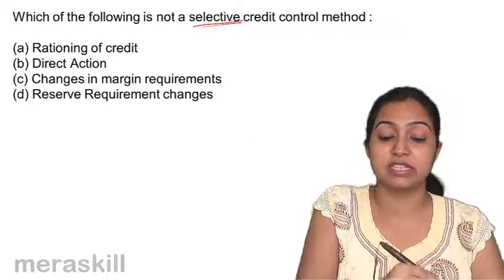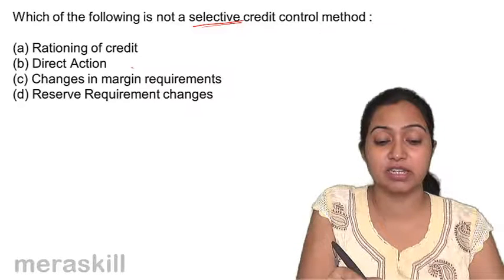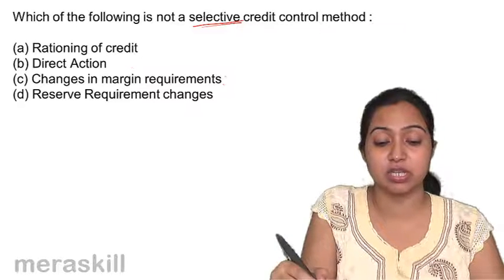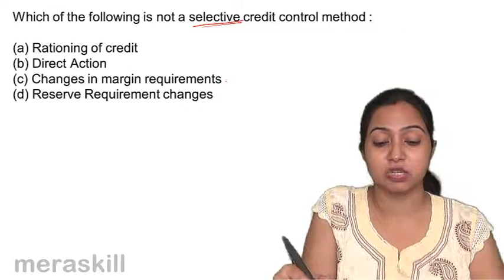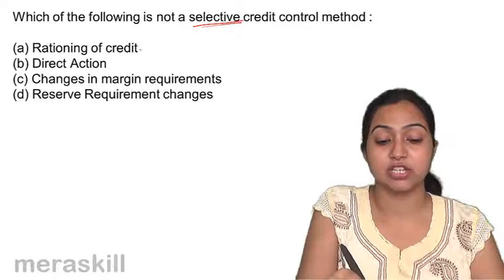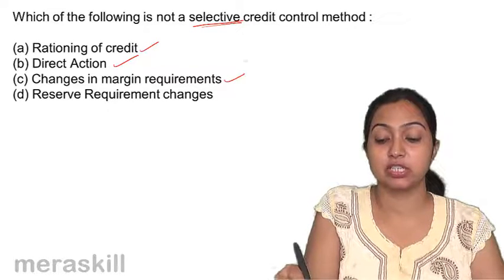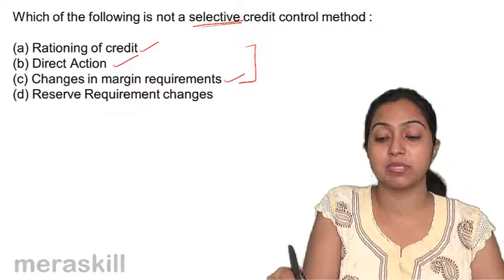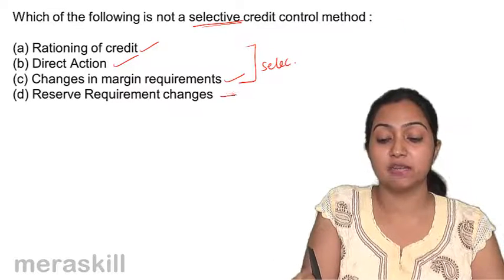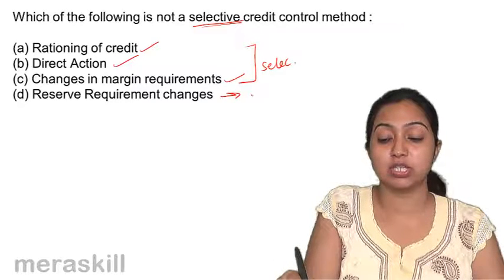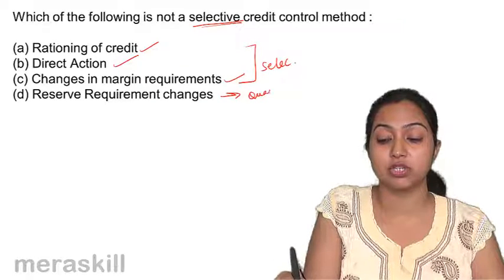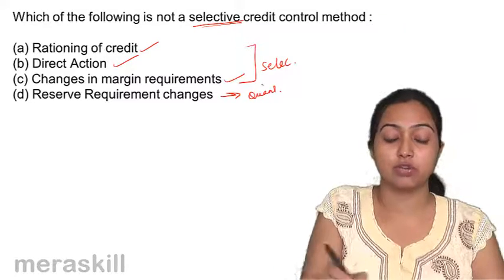We recently studied rationing of credit, direct action, changes in marginal requirements — all these were selective measures. Reserve requirement changes was a quantitative measure or a general measure, not a selective one.